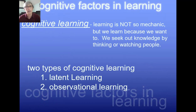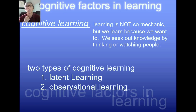Cognition is thinking, and cognitive learning is learning that is not so mechanical. We learn because we want to - really without much effort. We seek out knowledge by thinking and watching other people. There are two types we'll cover here: latent learning and observational learning.